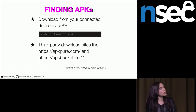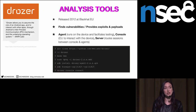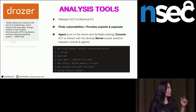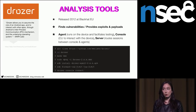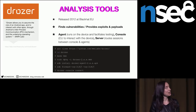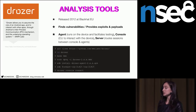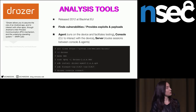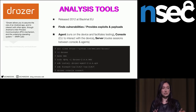Drozer is a really handy application for analyzing and auditing apps. It basically allows you to assume the role of an Android application so you can interact with whatever app you're testing, find which content providers are exported, and check for SQL injection vulnerabilities. It's dual-purpose — it helps you find vulnerabilities but also provides exploits and payloads. Drozer has three main components: an agent (a lightweight Android application on the device you're testing), a console for running commands, and a server that routes sessions between the console and agents.